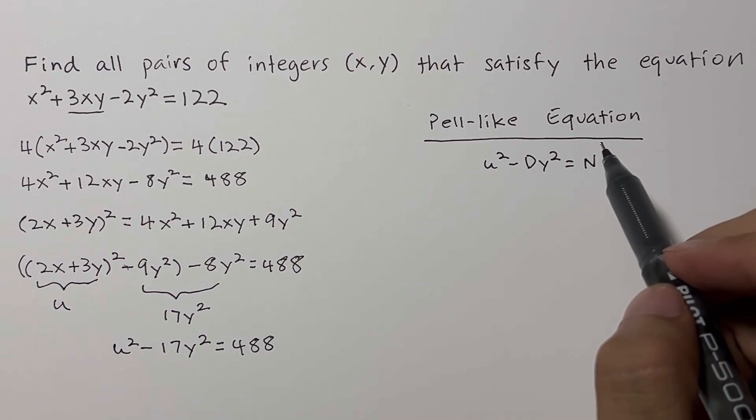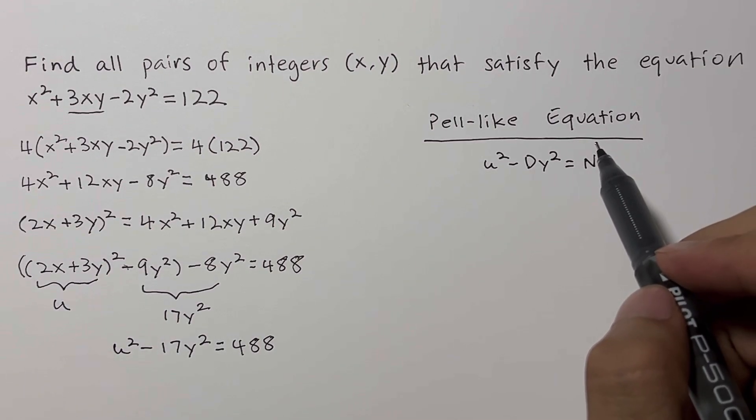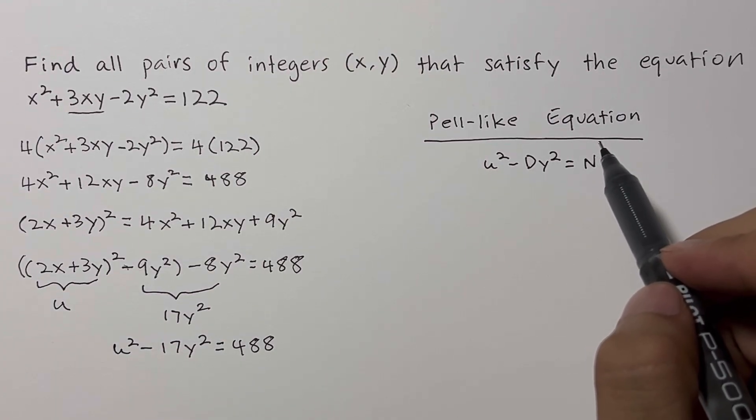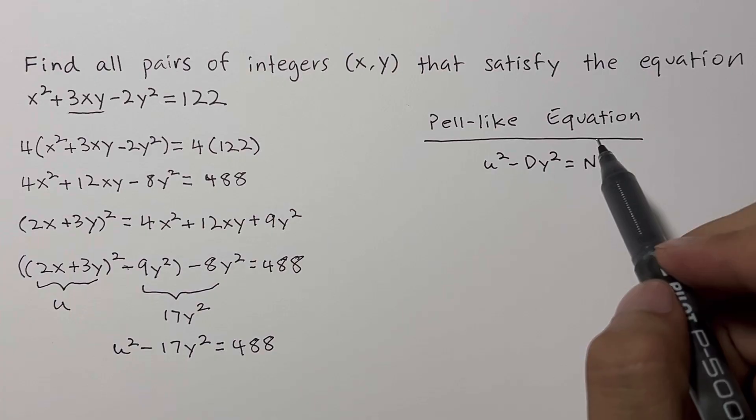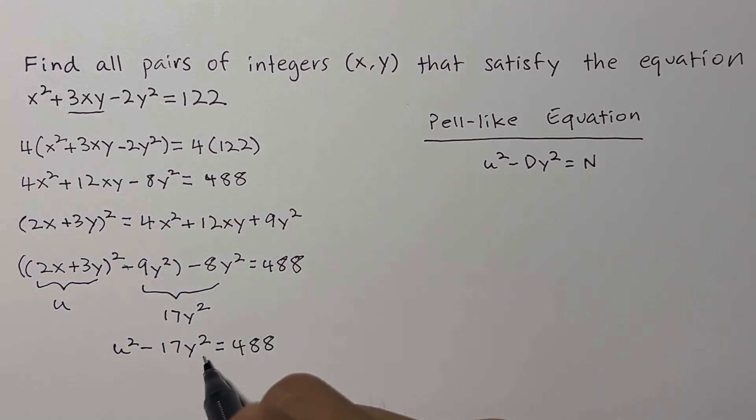So, the most powerful tool to check for the existence of integer solutions is modular arithmetic. We can analyze the equation modulo n, which means looking at the remainders when each side is divided by n. The number 17 in our equation, u² - 17y² = 488, is a prime number and a perfect candidate for modulus. So, let's consider the equation modulo 17.